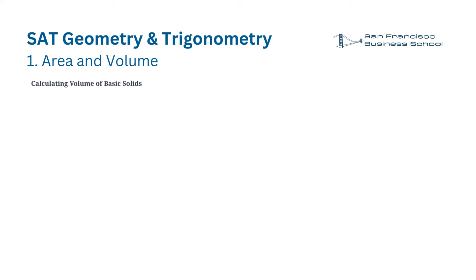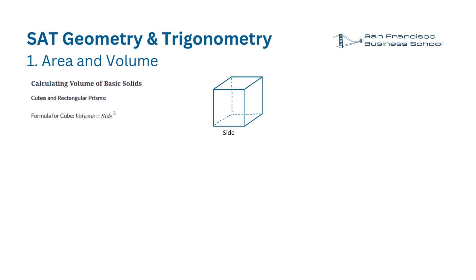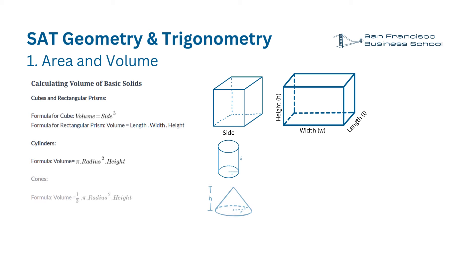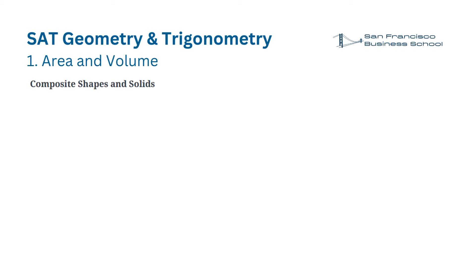Circles: Area equals π times R squared. Memorize these formulas for solving SAT geometry questions correctly. Calculating volume of basic solids. Cubes: Volume equals side cubed. Rectangular prism: Volume equals length times width times height. Cylinders: Volume equals π times r squared times height. Cones: Volume equals 1/3 times π times r squared times height. Spheres: Volume equals 4/3 times π times radius cubed.